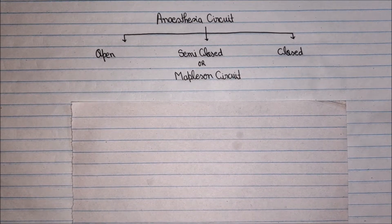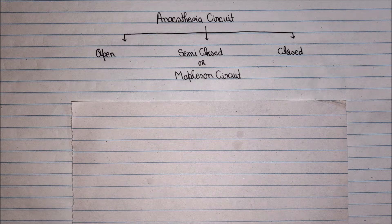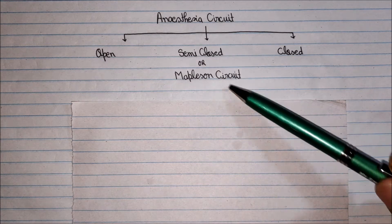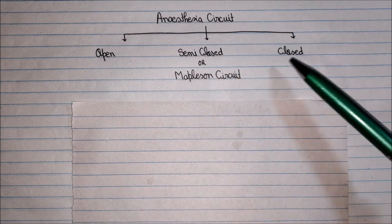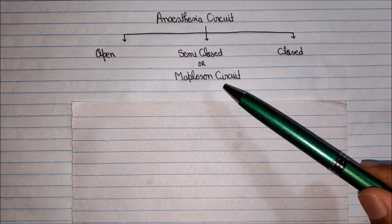Today we are going to discuss anesthesia circuits, specifically the Mapleson circuits. An anesthesia circuit is a connection between the patient and the anesthesia machine to provide inspiratory gases to the patient and take away the expiratory gases. Anesthesia circuits can be classified into three categories: open, semi-closed, and closed. Open is now clinically not useful. Semi-closed circuits are also known as Mapleson circuits, and both semi-closed and closed circuits are used clinically, each with their own advantages and disadvantages.